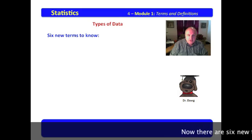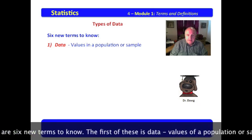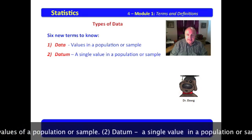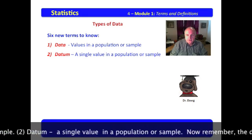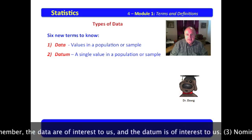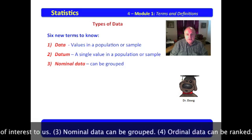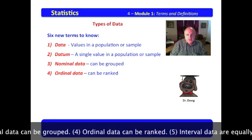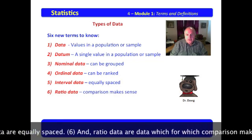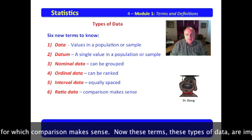Now, there are six new terms to know. The first of these is data: values in a population or sample. Datum, a single value in a population or sample. Now, remember, the data are of interest to us and the datum is of interest to us. Nominal data can be grouped. Ordinal data can be ranked. Interval data are equally spaced. And ratio data are data for which comparison makes sense.